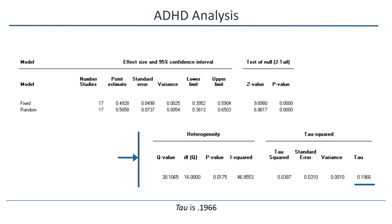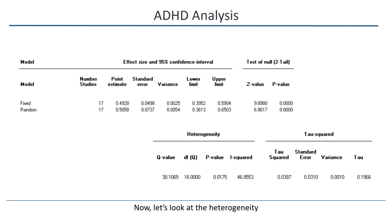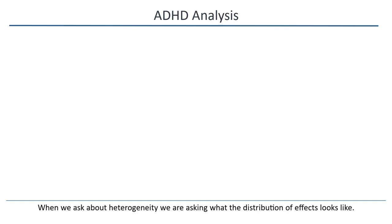As we saw, the mean effect size is roughly 0.50, with a confidence interval of around 0.35 to 0.65. Now, let's look at the heterogeneity. First, let's be clear what we mean by heterogeneity and why it's important. When we ask about heterogeneity, we're asking what the distribution of effects looks like. There are an infinite number of possibilities, and I'll use three for purposes of this illustration.